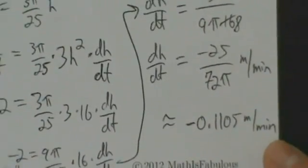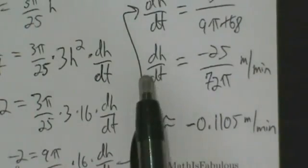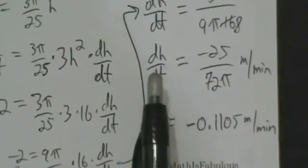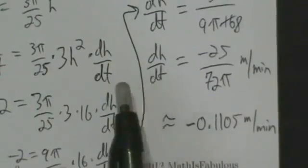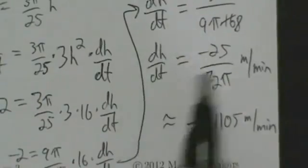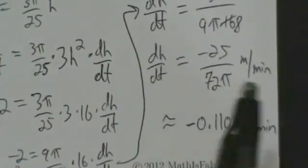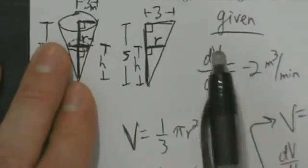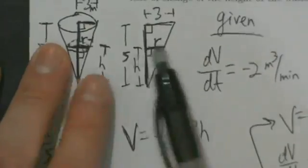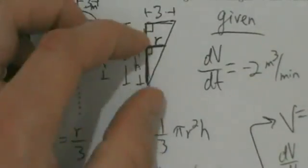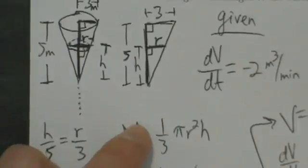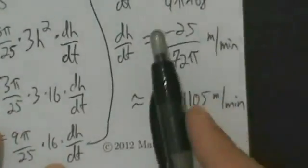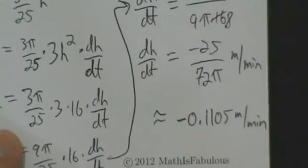That's our answer for example five. Think about what it means to be negative: if dH/dt is negative, the rate of change of H with respect to T is negative, so as time goes on H is decreasing. Does that make sense? Yes — the water is draining out of the tank, so of course the volume decreases, and if the volume is decreasing then the height of the water level is also decreasing. So it makes sense that dH/dt would be negative.